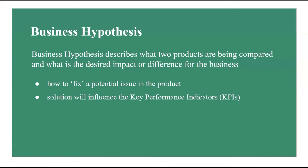This is how the data looks and what you can expect from data engineers once your A/B test has been conducted and they have collected the data, assuming data integrity has been maintained and there was no systematic error in collecting and measuring performance of the control and experimental versions. The first thing we are going to do is estimate p̂_control and p̂_experimental. For that we need to count the number of clicks per group.